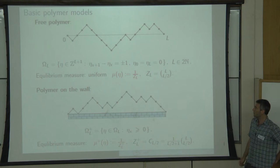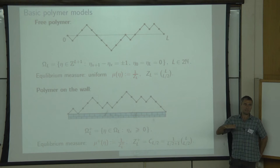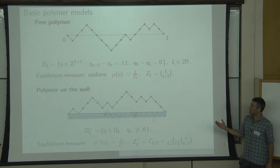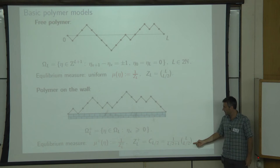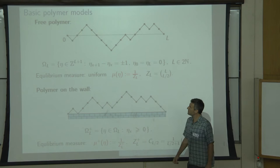Another basic model is the polymer on the wall, where I put a constraint that the polymer is above a given substrate. The polymer is on the wall when it is constrained to be non-negative. The set of all these objects is omega L plus, also called the set of Dyck paths, and the number of them is the Catalan number of index L over 2. The equilibrium measure will be uniform over all such objects.